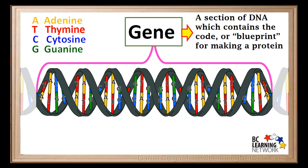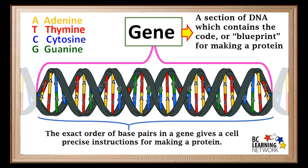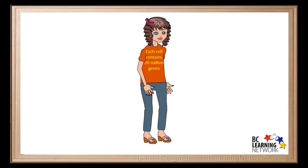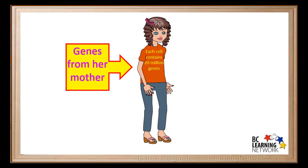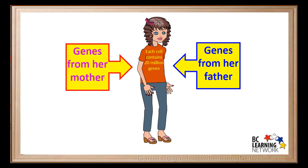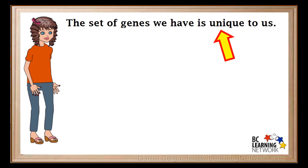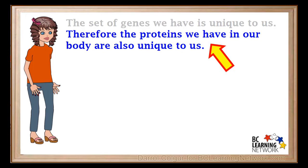Remember, a gene is a section of DNA which contains the code for making a protein. It is the exact order of the base pairs in a gene that gives the cell precise instructions on how to make a particular protein. It has been estimated that the DNA of a human contains roughly 20 million protein-coding genes. Half of the genes are inherited from our mother and half from our father. The set of genes we have is unique to each one of us. Because our genes determine our proteins, the proteins we have in our body are also unique to each of us.